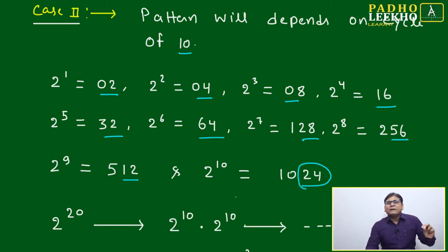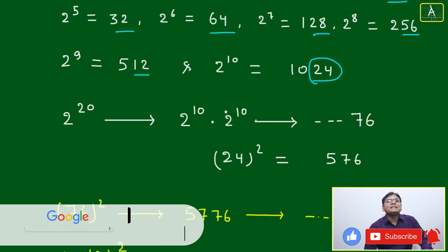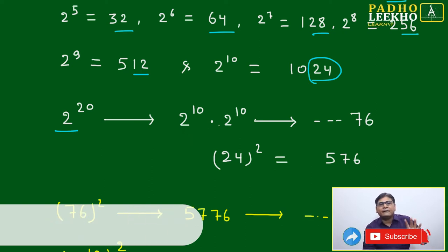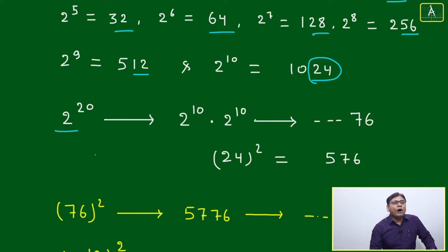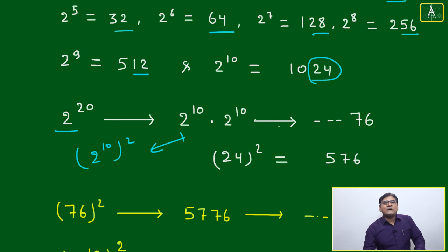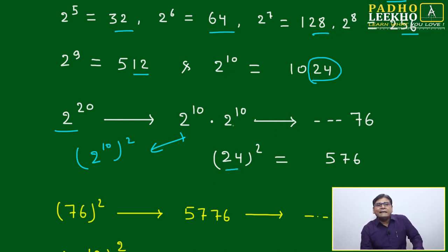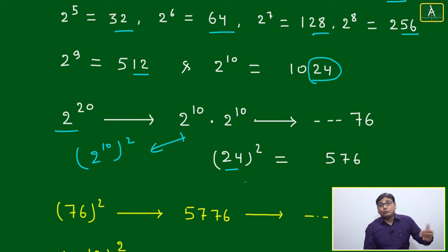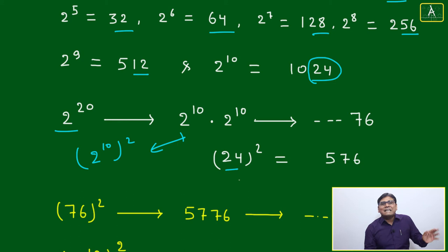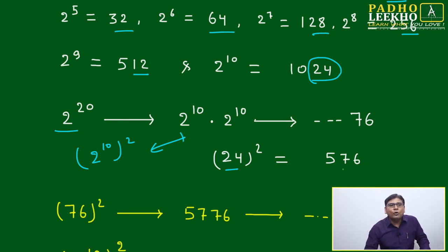2 to the power 10 gives last two digits 24. Now let's extend this. 2 to the power 20 equals 2 to the power 10 times 2 to the power 10, which is 2 to the power 10 squared. Since 2 to the power 10 is 1024, the last two digits are 24. So we need 24 squared. Up to 25, we already have squares memorized: 24 squared is 576, so the last two digits are 76. Therefore, 2 to the power 20 ends in 76.